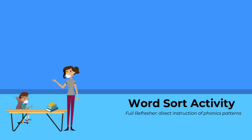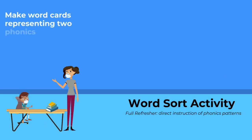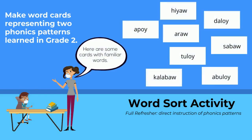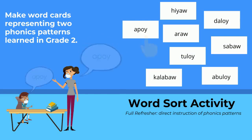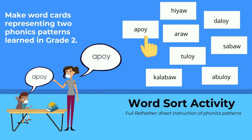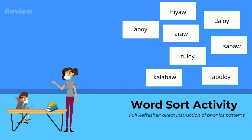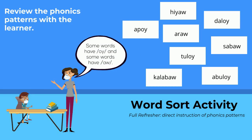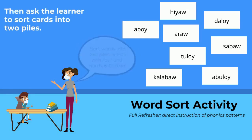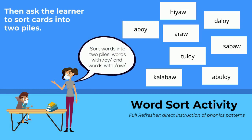For this activity, start by making word cards that represent two phonics patterns learned at the beginning of grade 2. Practice reading the words together with a child. Review the two phonics patterns with the learner, and then ask them to sort the words into two different piles.